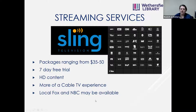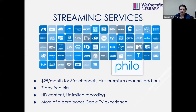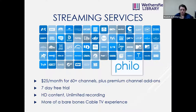Sling may also have your local Fox and NBC stations depending on your market. Philo is very similar to Sling — a stripped-down version at $25 a month for 60-plus channels, with premium channel add-ons available. It has a 7-day free trial and unlimited recording on a cloud DVR. It's more of a bare-bones cable TV experience.